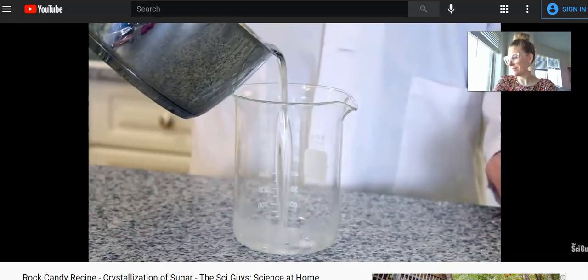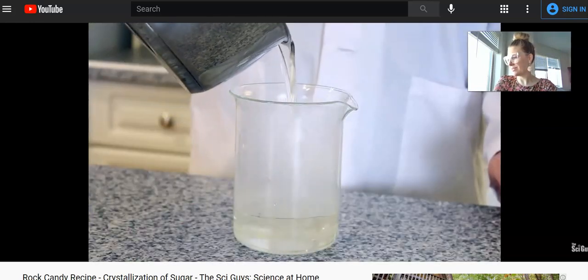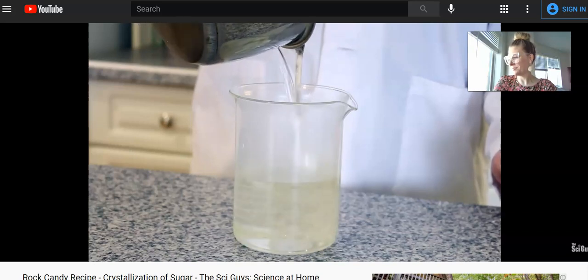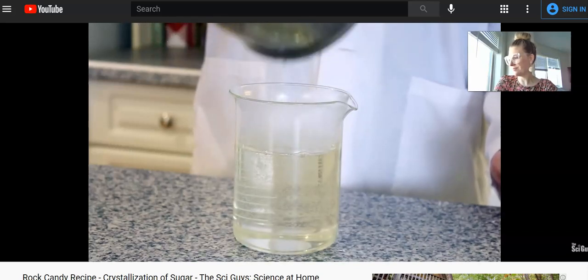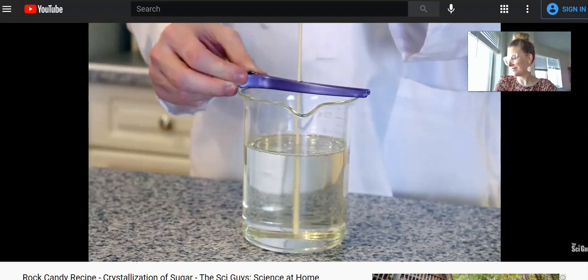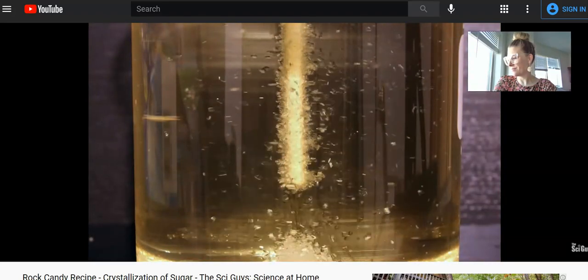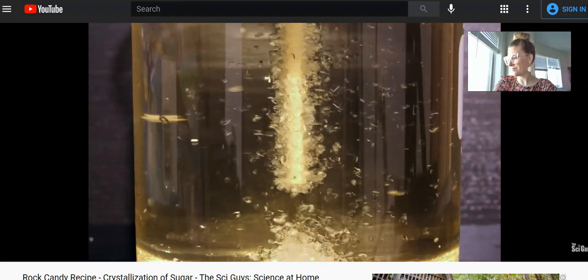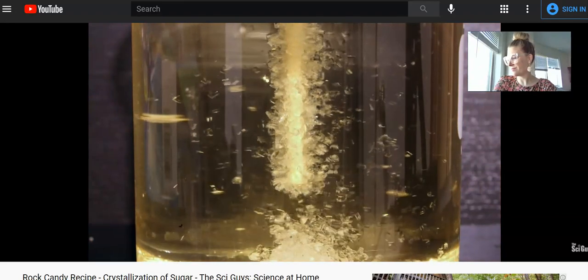The next step in our experiment is to take your boiling solution and pour it into the glass in which you're going to grow your crystals. Let the solution cool for 10 minutes, and then place the sugar-coated stick into the middle of the glass and hold it in place with a clip. Leave your solution in a warm, dry place to cool. As it cools, crystals will begin to grow on the stick.